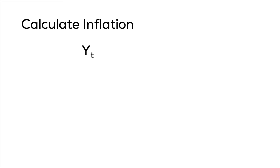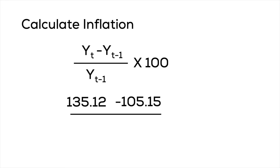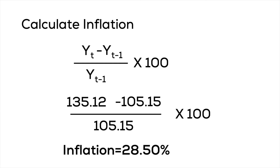Now we have the CPI for 2015, which was 105.15, and for 2016, which was 135.12. We can calculate the inflation rate between the two years, which is simply the growth rate of CPI: (Y_t minus Y_{t-1}) divided by Y_{t-1}, multiplied by 100. That's (135.12 minus 105.15) divided by 105.15, multiplied by 100, giving an inflation rate of 28.50 percent.